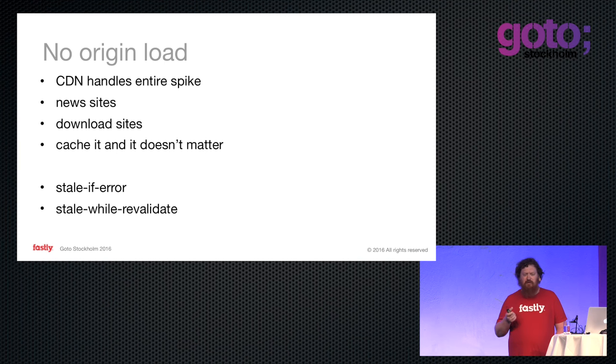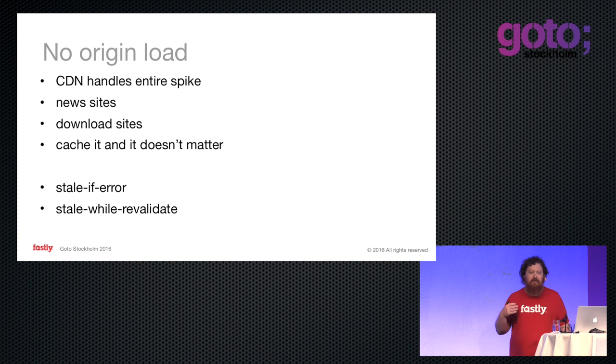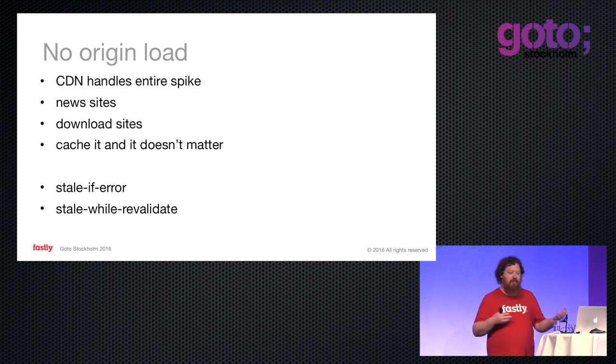We also support stale-while-revalidate and stale-if-error. So if your origin goes down, we keep serving whatever content we have. If you have an outage, the CDN has the content — no one should ever notice. We had a customer email us and say, 'I took down our data center and the site is still working. Can you explain how?' And I was like, yeah, it's because things work like they should.